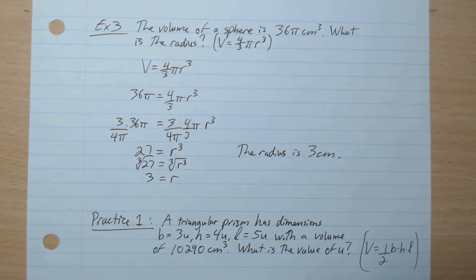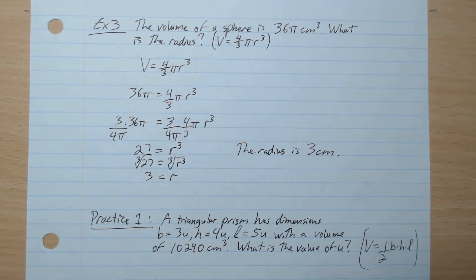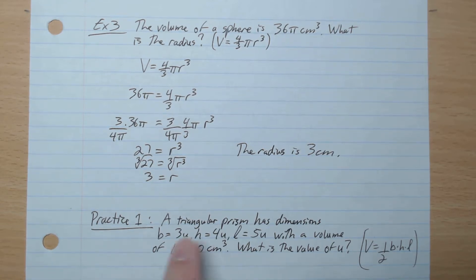Okay, time for you guys to do some practice. Practice one. A triangular prism has dimensions b, h, and l: 3u, 4u, 5u, respectively. With a volume of 10,290 centimeters cubed. What is the value of u?